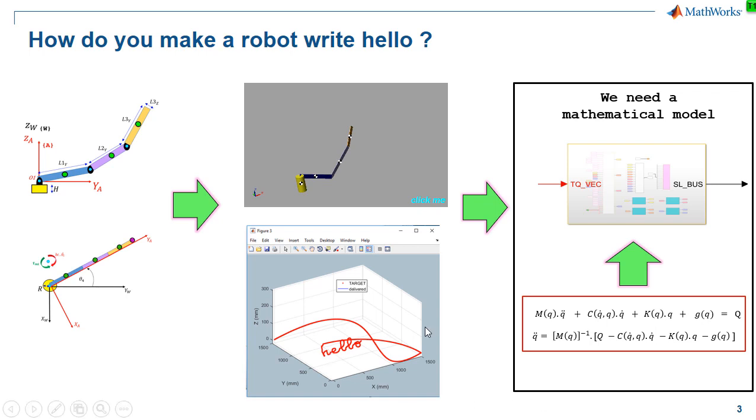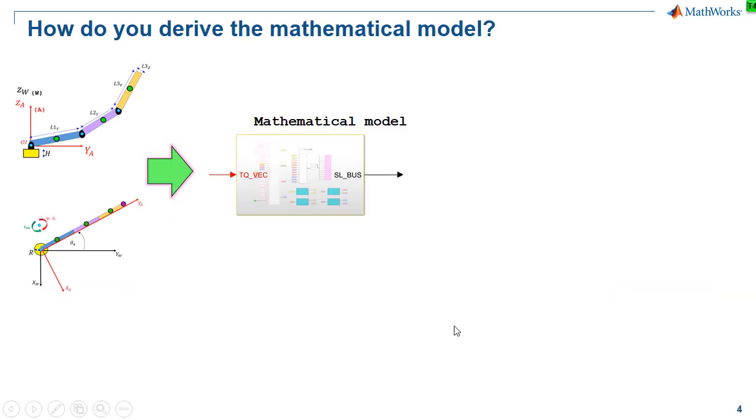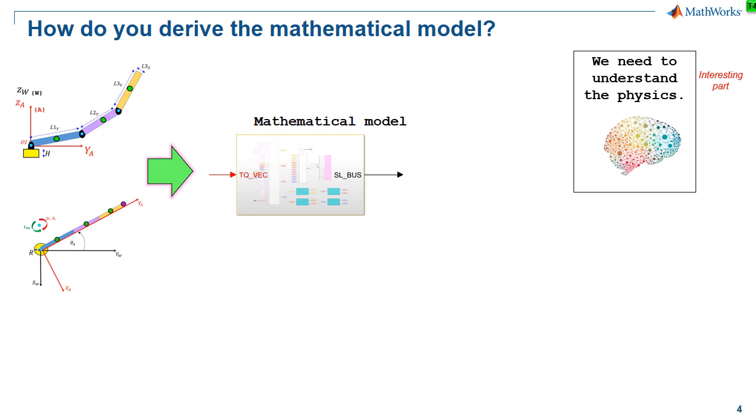So the next question shouldn't come as a surprise, and that is, how do we derive that mathematical model? The answer to this question involves a series of steps. We first of all need to understand the foundation physics of the system. And this is the really interesting part of the design problem, isn't it? Getting your students to pull together all of the relevant concepts that they've been learning about in the classroom, and then applying that knowledge.